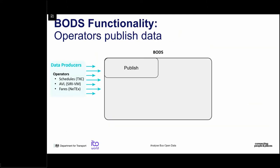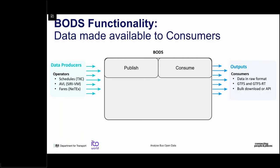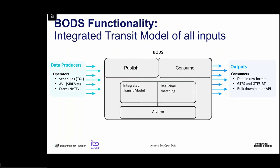To talk a little more about BODS and how Analyze Bus Open Data fits in: the published service allows operators to provide schedules in TransXChange format, vehicle location information in SIRI-VM format, and fares in NeTEx format. The Find Bus Open Data service allows consumers to get that data in raw format, as well as GTFS and GTFS-RT data for vehicle positions, via API or bulk download. We then take this real-time and static data into a model, attempting to match real-time data to timetables, and continuously archive it every minute of every day.